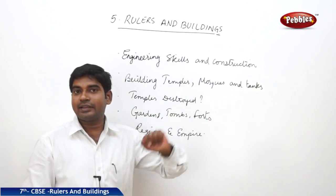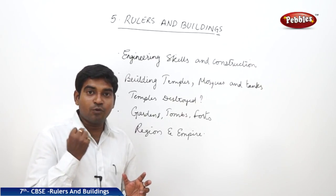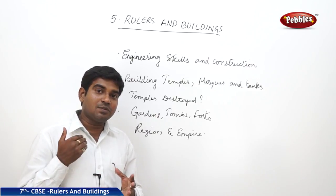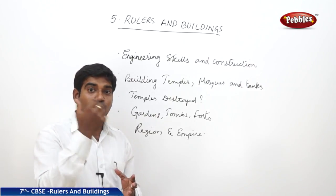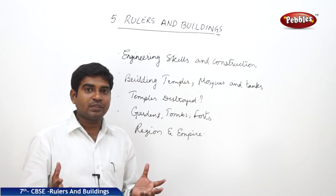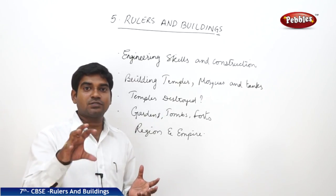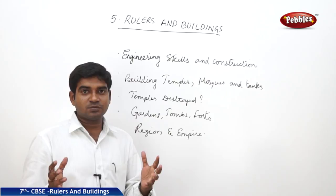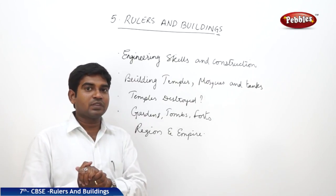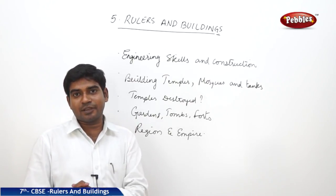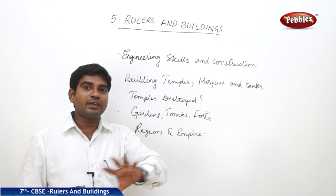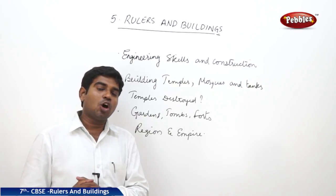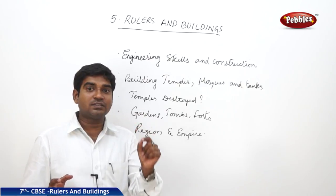Building temples, mosques, and tanks were considered a devotional connection to God by emperors and kings, as well as a way to establish their power, prestige, and wealth. They also constructed tanks to gain the support of the people. This was started by Iltutmish, who constructed the king's reservoir and received immense support from the public, because supplying water always gains people's support — it is believed the king should always take care of his subjects.